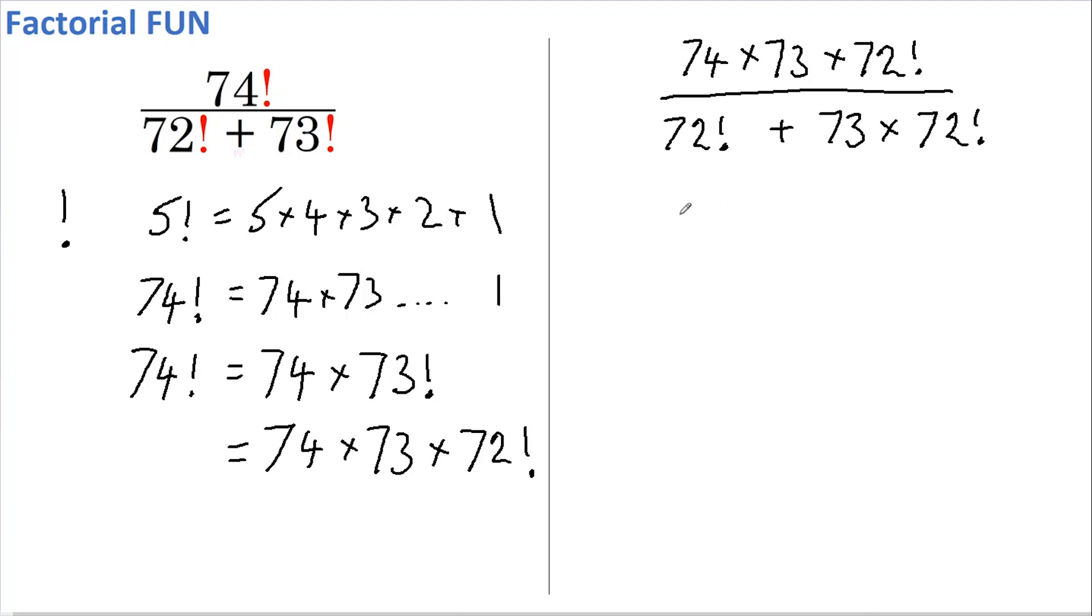This gives us exactly the same on the top. And on the bottom we can pull out the 72 factorial and we get 1 plus 73. And now we can do some cancelling.